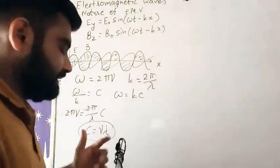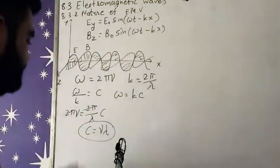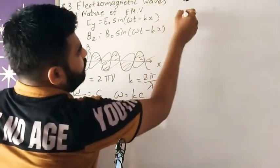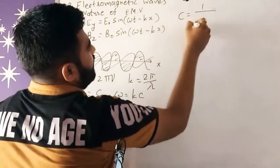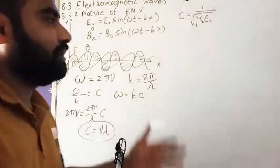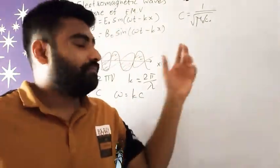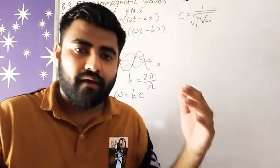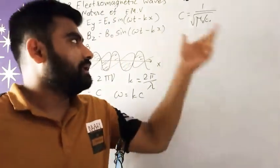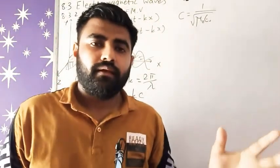So this is c = νλ. Ab c ki doosri formula, hamne wo derive ki hui hai, kaun si formula? 1/√(μ₀ε₀). Now the question is, what is μ₀ and ε₀? μ₀ is permeability in vacuum, and ε₀ is permittivity in vacuum. So we get here c.